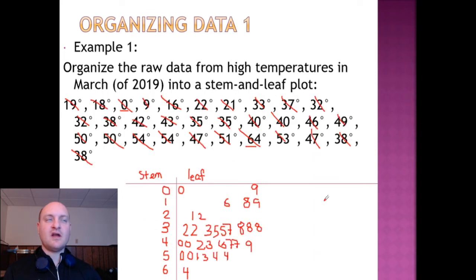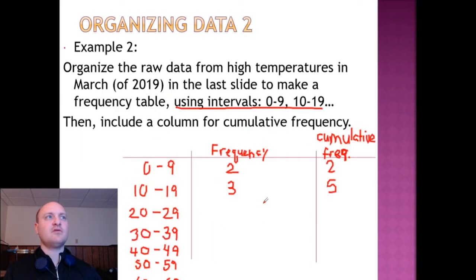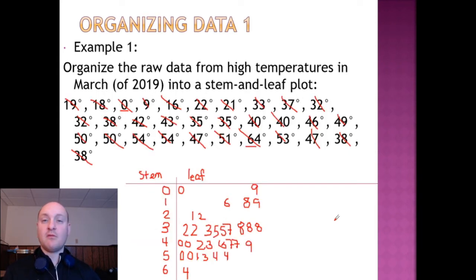Next, in our 20 to 29 range, there are two values, which will bring our cumulative frequency up to 7. And in the 30 to 39 range, we have a lot more. That comes out to 9 values.